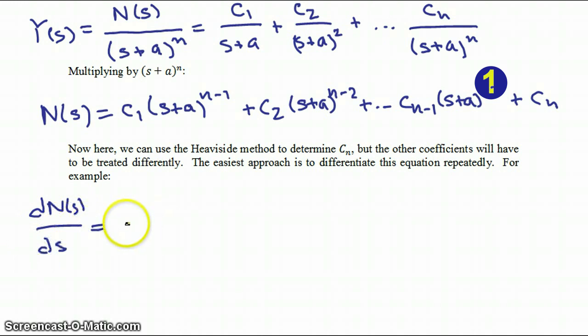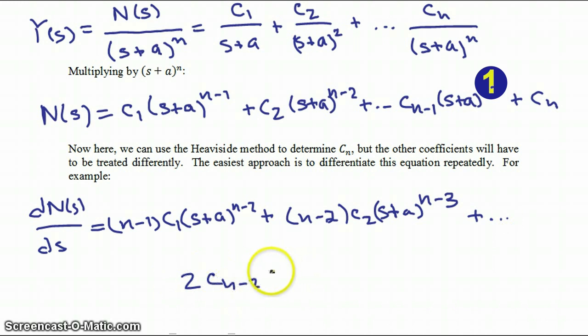then dN/ds is equal to n minus 1 times C1 times s plus a to the n minus 2, plus n minus 2 times C2 times s plus a to the n minus 3, plus 2 Cn minus 2 times s plus a, plus Cn minus 1.